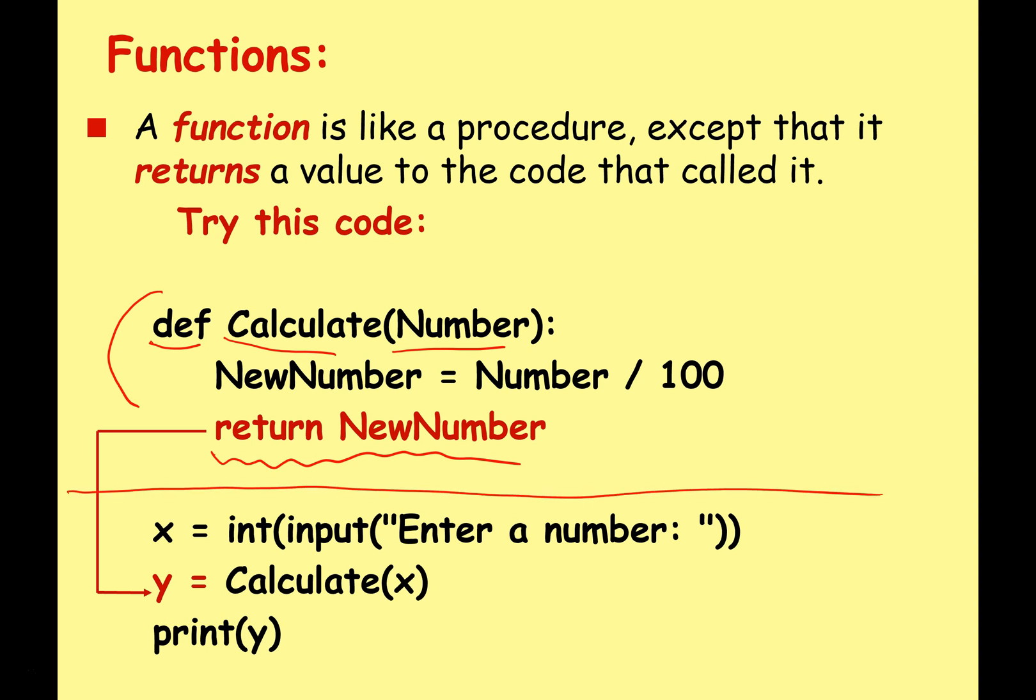Let's have a look at our main program here, just kind of separate these two out. So the main code where the computer starts: x equals int input enter number, that's fair enough, somebody enters a number which is an integer. And then for variable y, the value that we want to store is going to be the result of calling the function Calculate. So we call Calculate, we send it the value of x that we just input earlier.